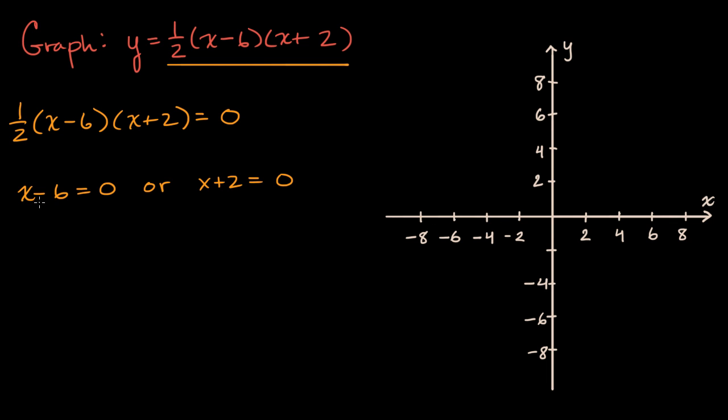And those would be places where our curve is intersecting the x-axis. So what x value makes x minus six equals zero? Well, you could add six to both sides. You're probably able to do that in your head. And you get x is equal to six, or you subtract two from both sides here, and you get x is equal to, these cancel out, you get x is equal to negative two.